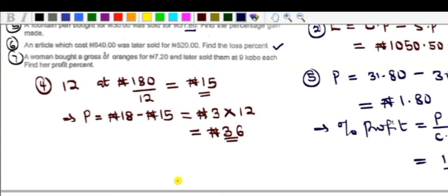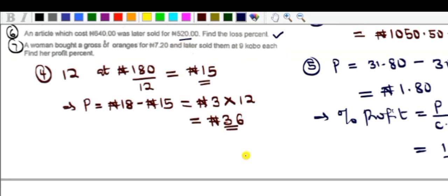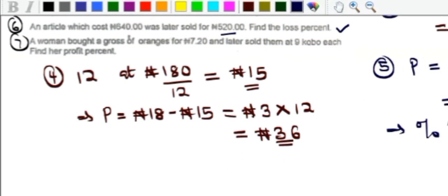Example six asks for the loss percent. An article was bought for 640 naira and sold at 520 naira. To find loss percent: get the loss, divide by the cost price, and multiply by 100.